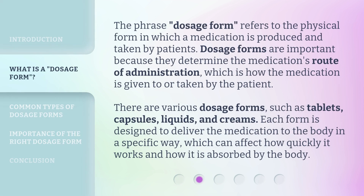The phrase 'dosage form' refers to the physical form in which a medication is produced and taken by patients. Dosage forms are important because they determine the medication's route of administration, which is how the medication is given to or taken by the patient.